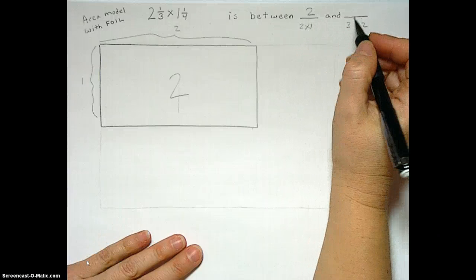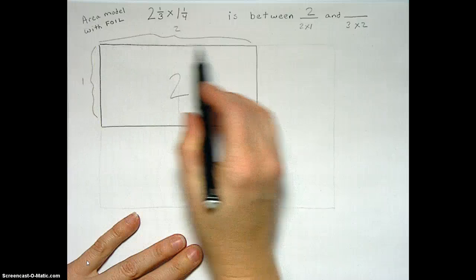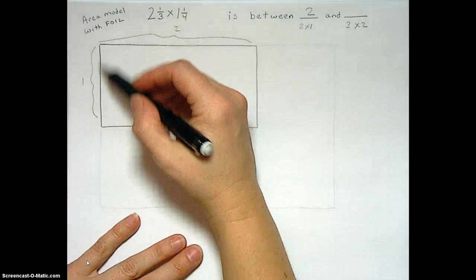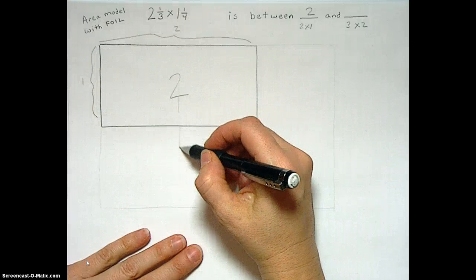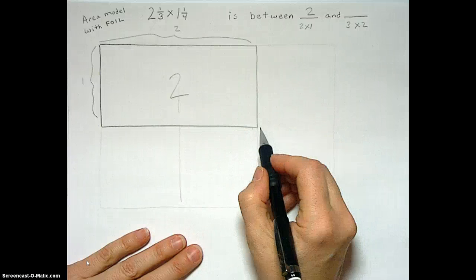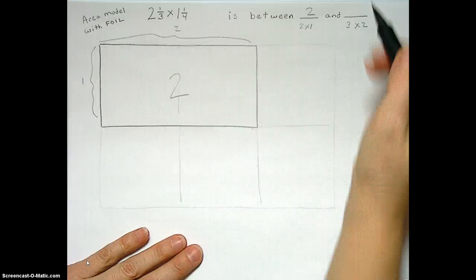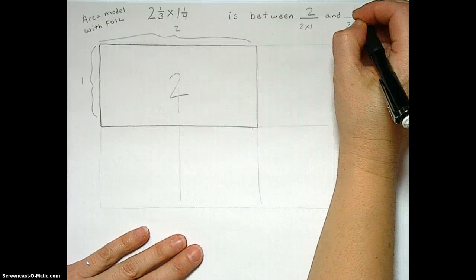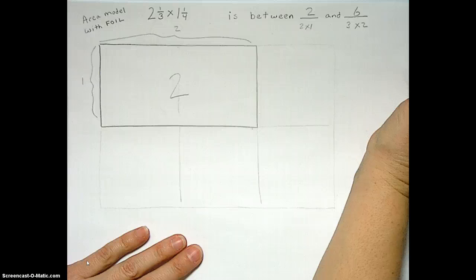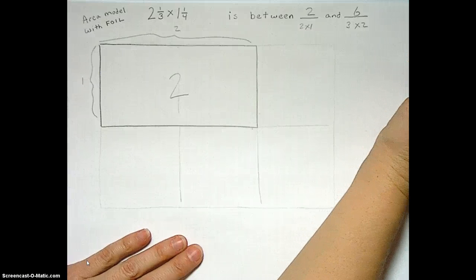And for that it has to be smaller than, we're going up one number from 2 to 3 and from 1 to 2. That would be this lovely rectangle here that has area 6 because it's 3 by 2. So we know the area of 2 and 1/3 times 1 and 1/4 has to be in between 2 and 6.